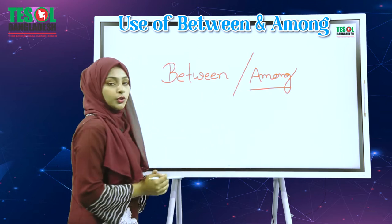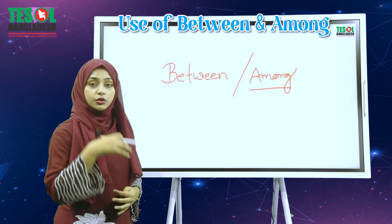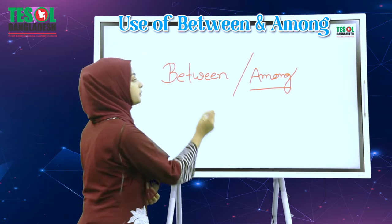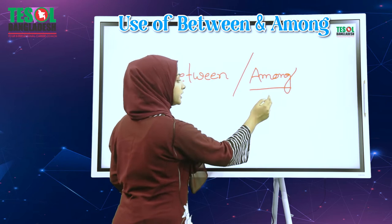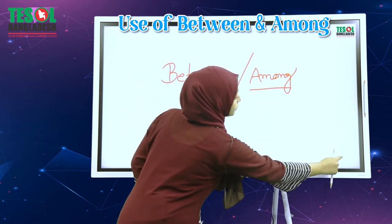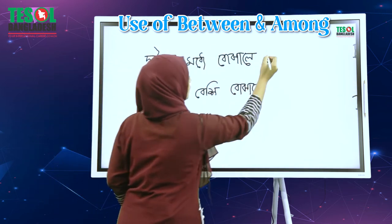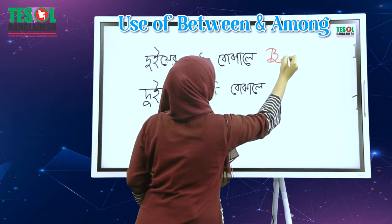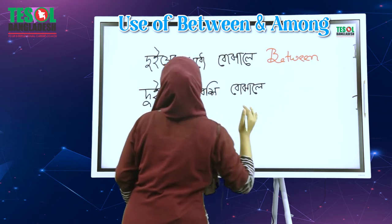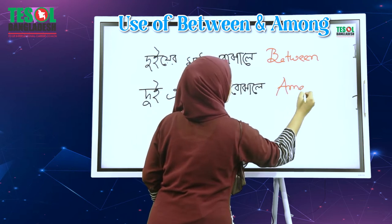Amra between use korebo takhon jokon dujoner moddhe kone kichu bujhano habai — when something is between two people. Ebong dujer odhik jokon bujhano habai, takhon amra among use korebo. So, cholun dekhi: dujer moddhe bujhano holai between, and dujer beshi bujhano habai, takhon among use korebo.